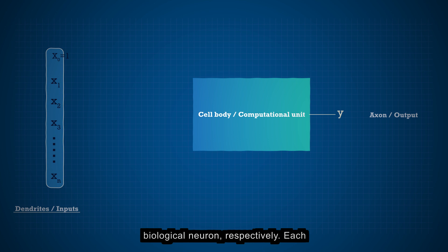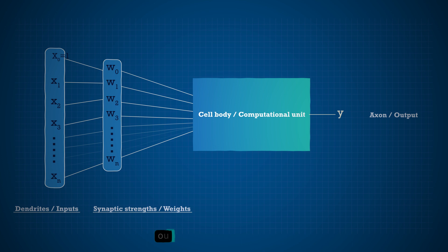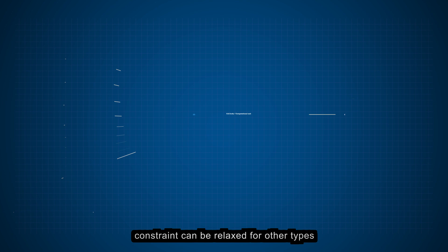Each input comes with its own weight w0, w1, w2, wn, representing the strength of connection to other neurons. Think of it as a synapse strength. The Perceptron's output is limited to two values, either negative 1 or 1, but remember, this constraint can be relaxed for other types of artificial neurons.